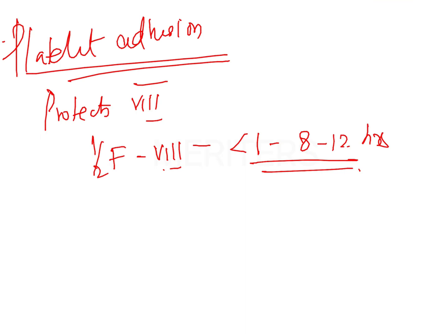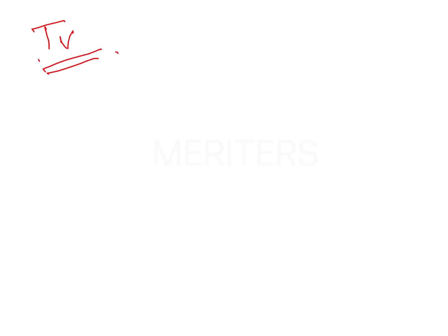Other uses of desmopressin: since it is a vasopressin analog, it stimulates von Willebrand factor release from the endothelium. When given by IV route, the dosage is 0.3 mcg per kg. It can also be given intranasally. It is effective in Type 1 von Willebrand disease, mild hemophilia, other types of hemostasis disorders, and even in cases of surgical blood loss.